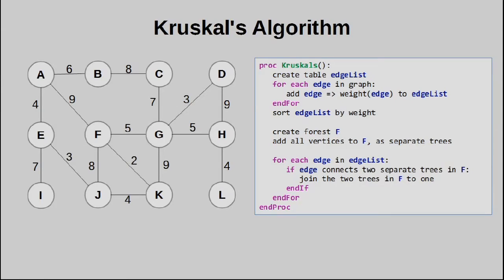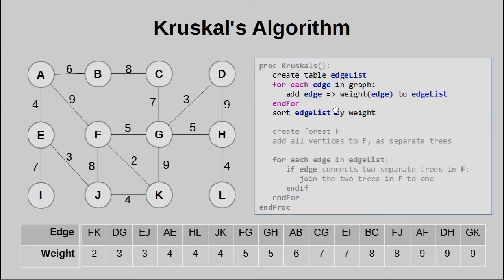Alright, let us jump into the trace of Kruskal's algorithm. So the first thing we want to do is to prepare our data structures. Basically, what we've done here is we've created a table called edge list, which is shown at the bottom of the screen here.